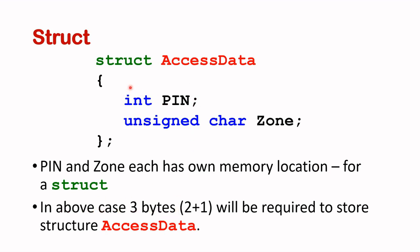Pin, because it's of type int, is 16 bits, so it requires two bytes of memory storage. And zone, which is unsigned char, will need eight bits, so it's one byte. So pin is two bytes, zone is one byte, two plus one — therefore this particular example will require three bytes to store the structure access data.